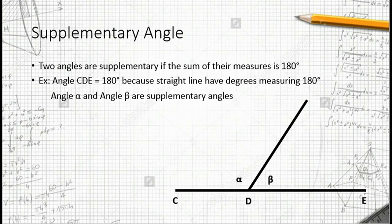We can easily tell the sum of angle alpha and angle beta is 180 degrees. Therefore, angle alpha and angle beta are supplementary angles.